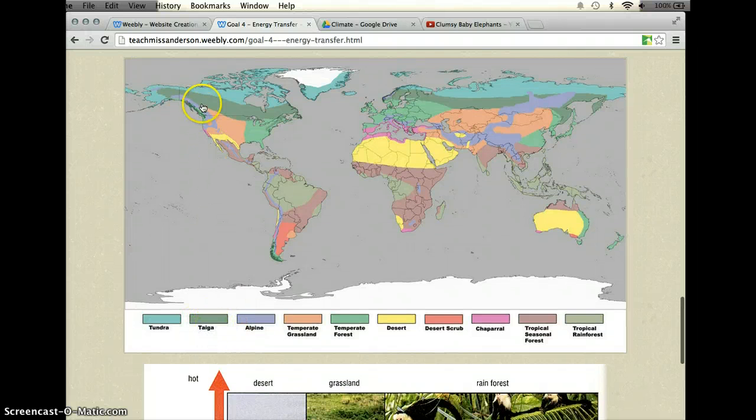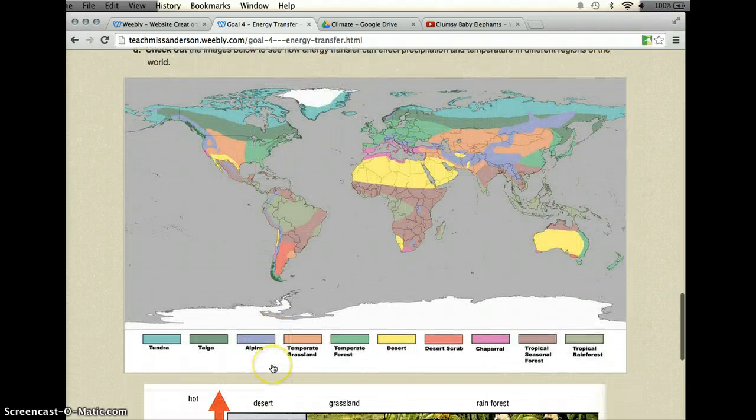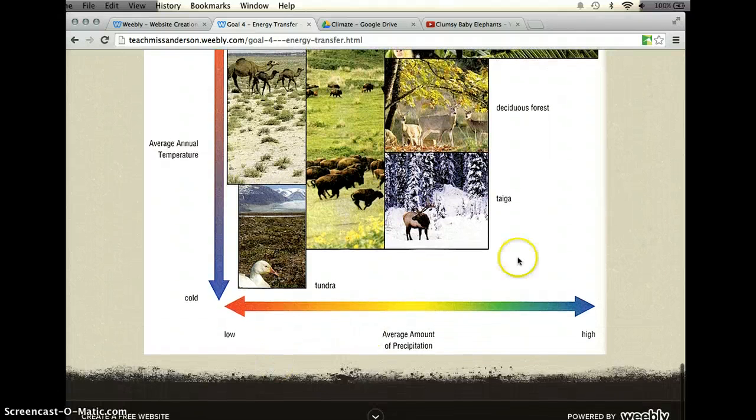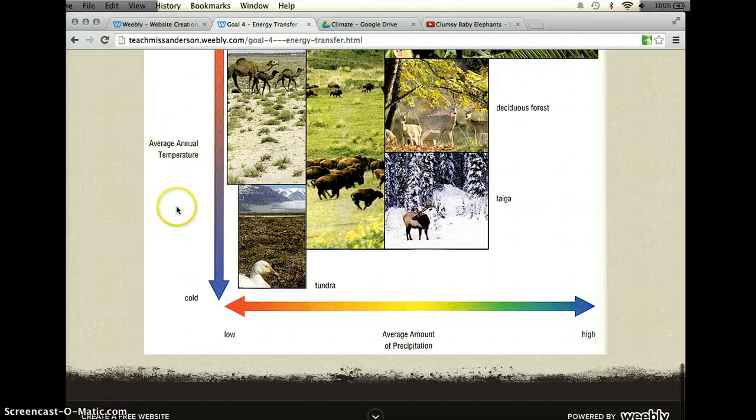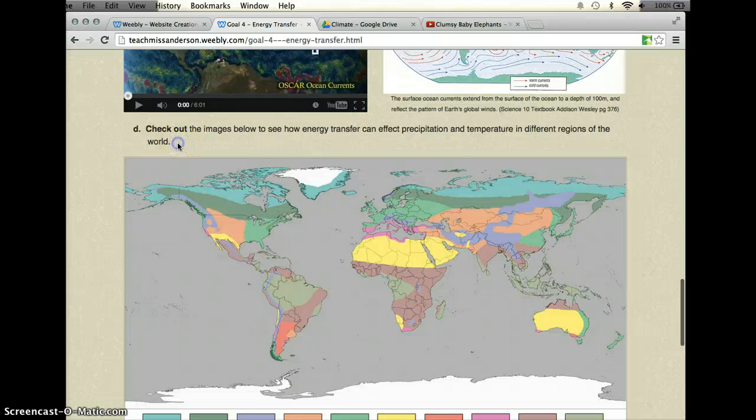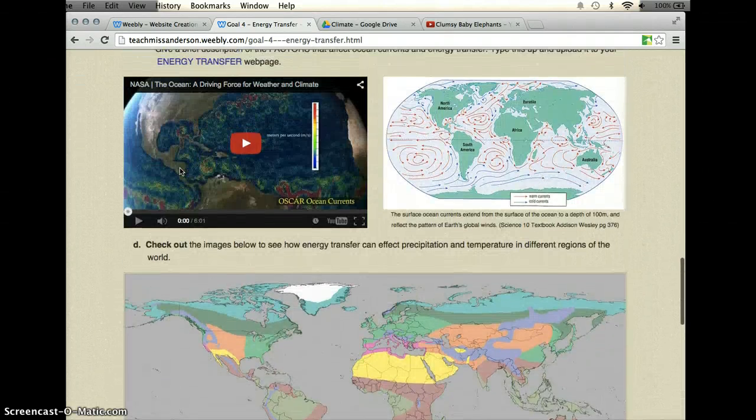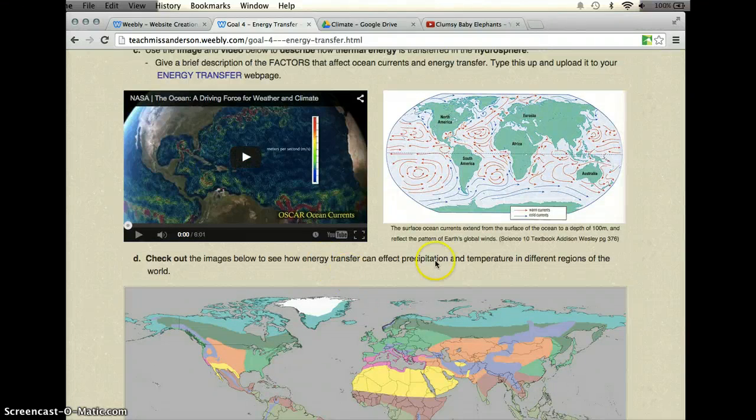So again, you can say taiga, which is mostly Canada actually. And you'll see that it stretches across like the northern strip of the world. And you can see here that it has a higher amount of precipitation and it's actually fairly cold. So you can check that out, compare the two, and you don't need to upload anything for this. But I would like you to just take a look and gain a little understanding of how that works.